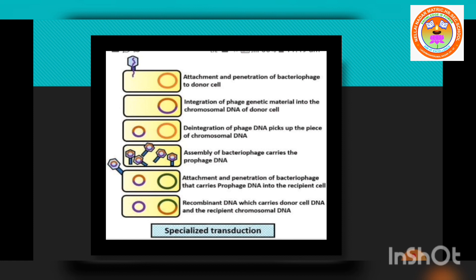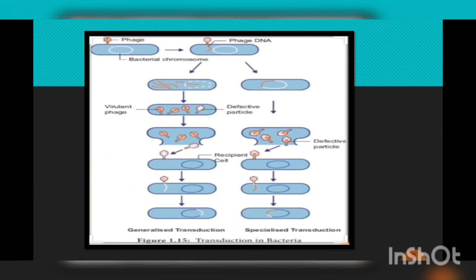The difference between the two: in generalized transduction, the bacteriophage can carry genetic material of any region of bacterial DNA, whereas in specialized transduction, it carries only a specific region. We discussed genetic recombination — sexual reproduction in bacteria — where there is no formation or fusion of gametes, but gene recombination takes place through three different methods: conjugation, transformation, and transduction. That's all about today's class. Thank you.